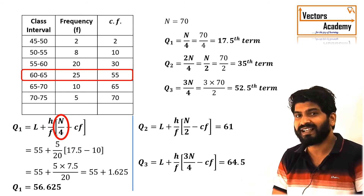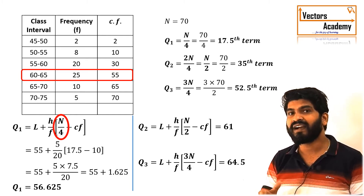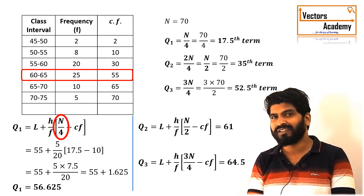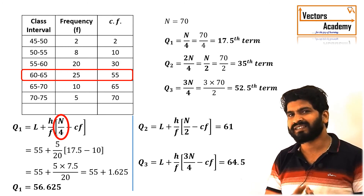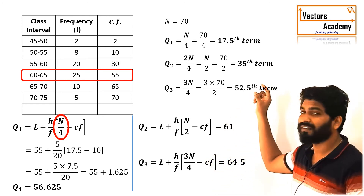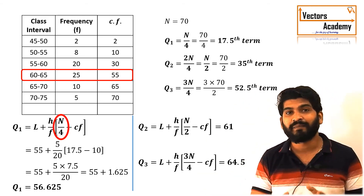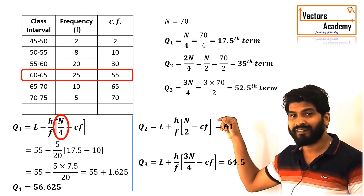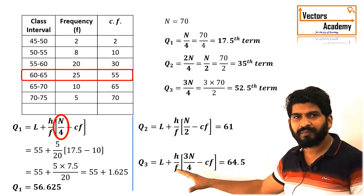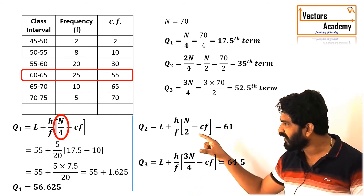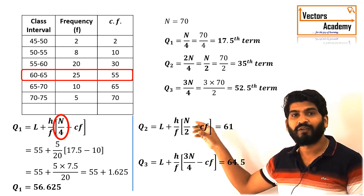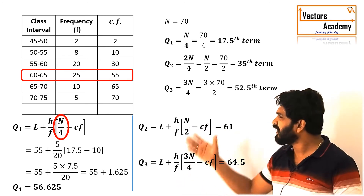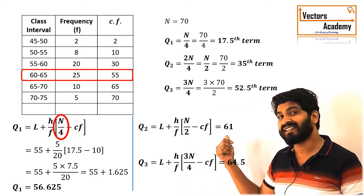Now that we understand quartiles, we can look at deciles and percentiles. Deca means 10, so deciles are the values which divide the data into 10 equal parts. The process remains the same — instead of n/4, we use n/10. For example, to find the sixth decile we use 6n/10, for the seventh decile we use 7n/10, and so on. The formula remains the same; only that one factor changes depending on which decile we need to find.